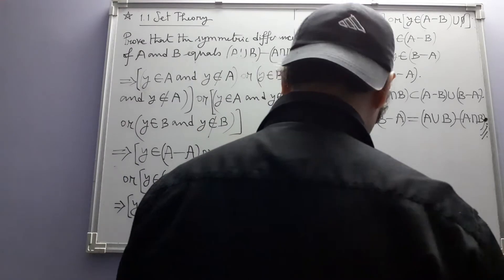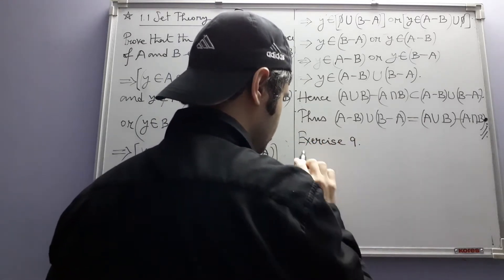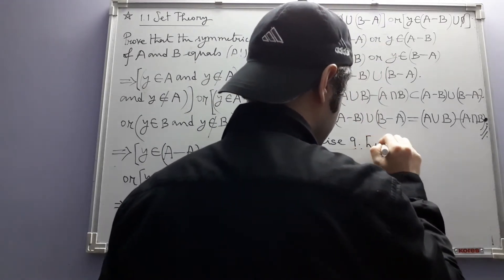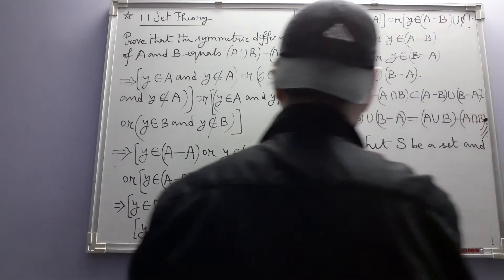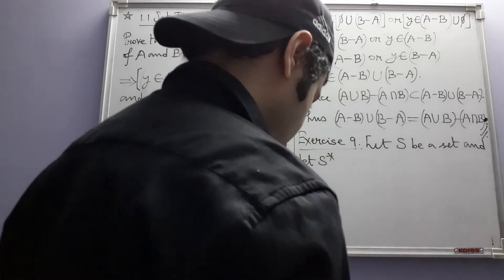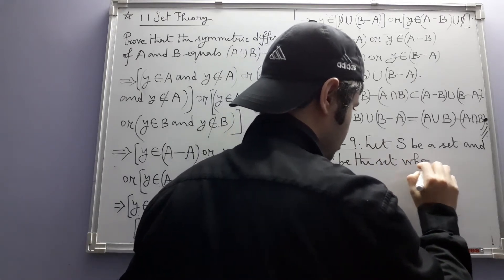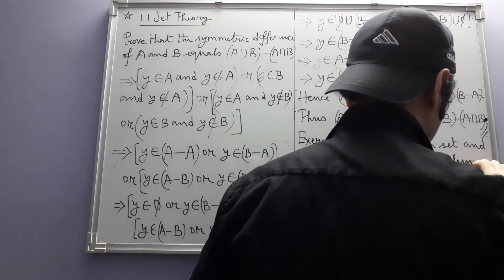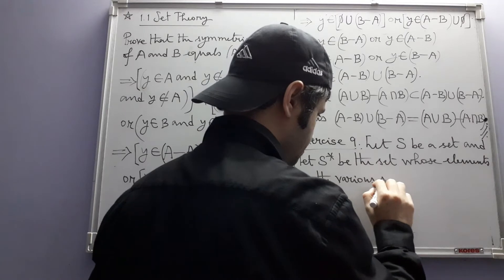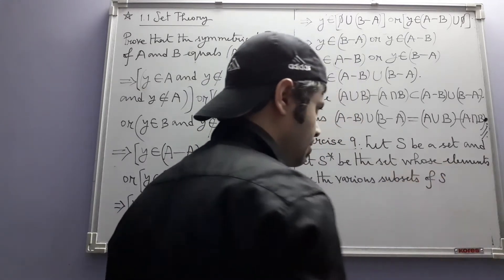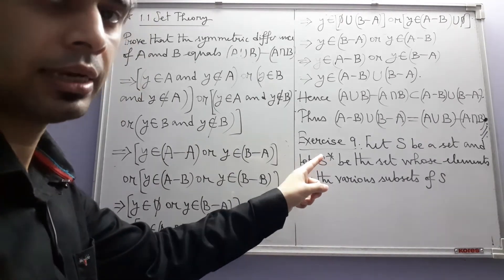After that we have the 9th exercise, which is really big. Let S be a set, and let S* be the set whose elements are the various subsets of S. So S* is nothing but the power set of S — what we normally know as the power set of S, which is denoted S* by Herstein.